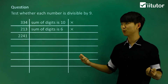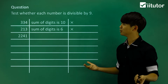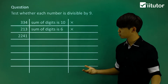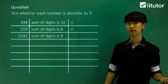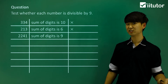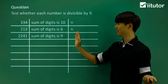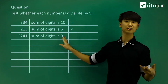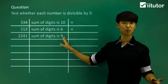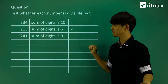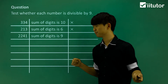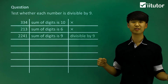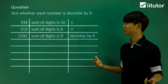2241. If we look at the sum of the digits, 2 plus 2 plus 4 plus 1, my sum of digits is equal to 9. And 9 is of course divisible by 9, so the sum of digits is divisible by 9. Then 2241 is of course divisible by 9.